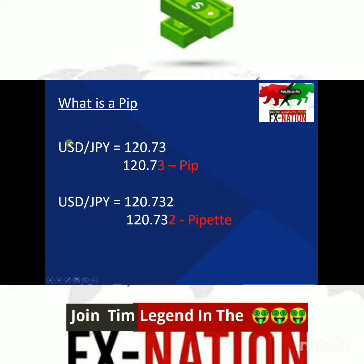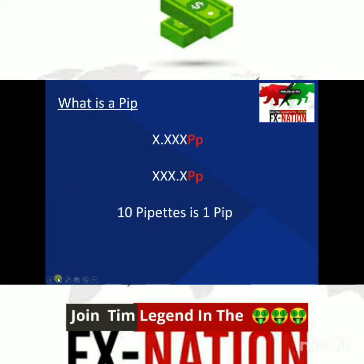This is how it would look for dollar yen: 120.73. First and second — so the second one is a pip. Third one is a pipette. Easy to remember: if you see five decimal places, the fifth one is a pipette and the fourth one is a pip. If you see three decimal places, the third one is a pipette and the second one is a pip. So 10 pipettes is one pip.